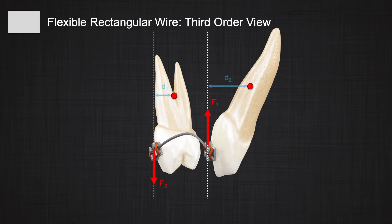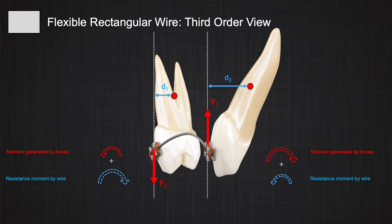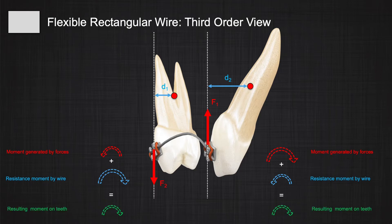If the wire is stiff enough, it can resist the movement of the adjacent teeth. As the vertical forces start to move the teeth in the third-order view, with a rectangular wire the resistance against change in the buccolingual direction depends on the adjacent teeth — specifically on the angulation of the adjacent teeth. If one tooth is very angulated and the other is less angulated, the more angulated one may affect the system, and both teeth change buccolingual angulation in the same direction as the tooth with the bigger moment — in this example, the canine.